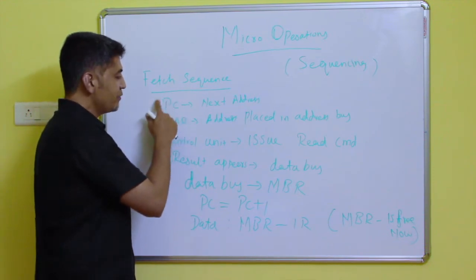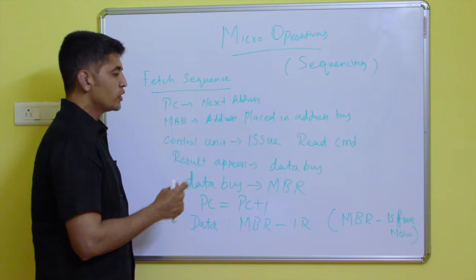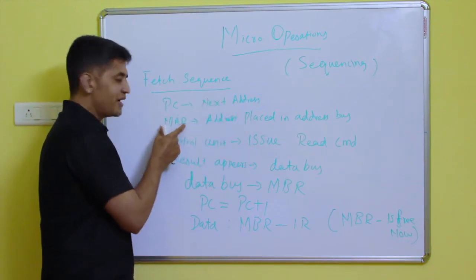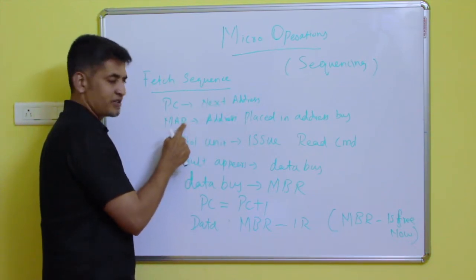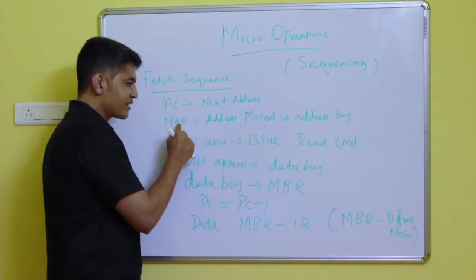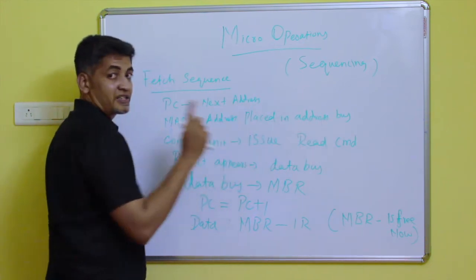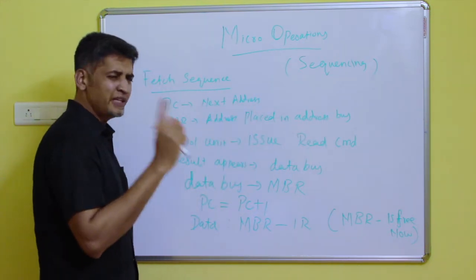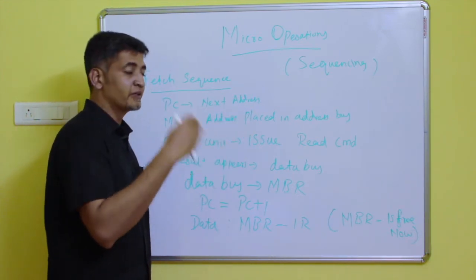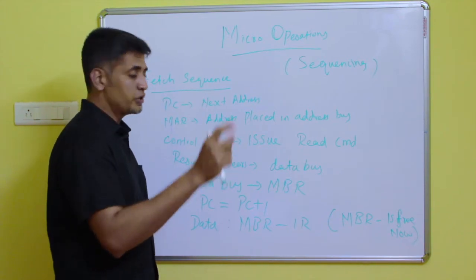First, the PC will have the next instruction address. That address will be placed in the MAR, that is the Memory Address Register. From the Memory Address Register, the address will be placed on the address bus. Based on that address, the control unit will issue a read command to the memory location.